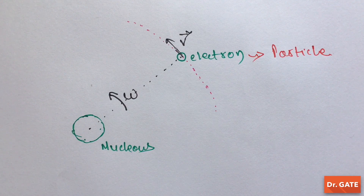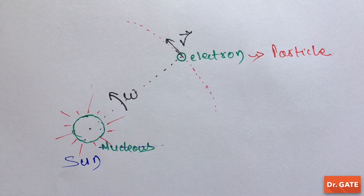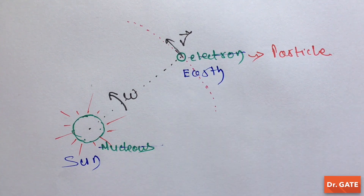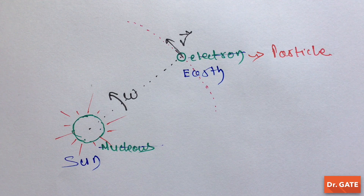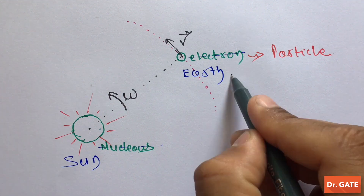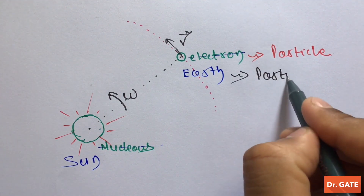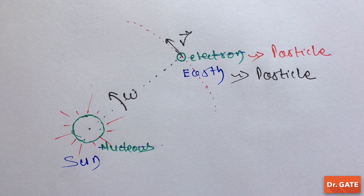Now let's again assume that this is not the nucleus but this is our Sun, and this is not the electron but this is our Earth. And we again want to study the motion of our Earth around the Sun. Then again, for this particular study, the dimension of our Earth is not important for us. So we can again take this Earth as a particle. Here you can see that it is not always necessary that the size of a particle is always microscopic.